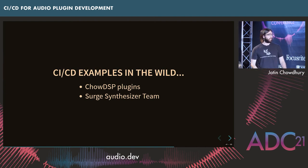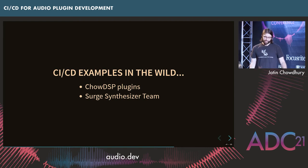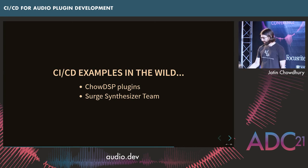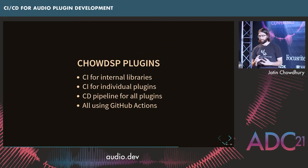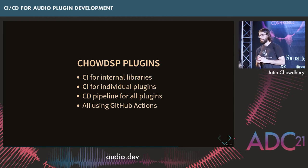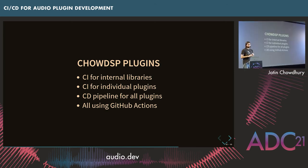I wanted to show some examples of how this works in a more real-world situation — specifically through open source projects, since we can actually see them. I have some of my own plugins and I'll walk you through my CI strategy. Then I'll show how the Surge synthesizer team does their CI, since they have a very sophisticated and well thought-out model. For my plugins, I have three layers to my CI and CD: a dedicated CI pipeline for each library I reuse between multiple plugins, a CI pipeline for each plugin, and one global continuous deployment pipeline that runs for all the plugins.